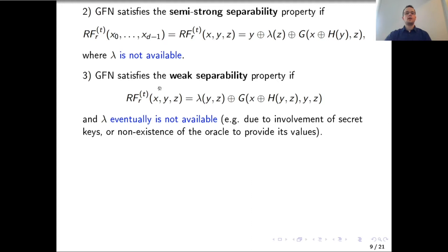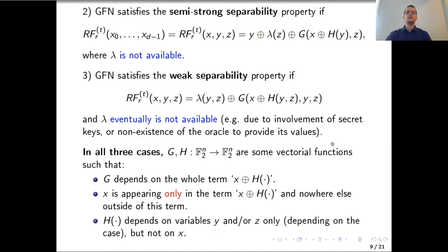Finally, we have weak separability if the observed branch has a form where lambda depends on y and z, and g depends on three terms: x plus h(y,z), and also y and z. Here we assume that lambda is eventually not available. We noted that using only three blocks x, y, and z is sufficient to capture descriptions of almost all generalized Feistel networks that we know.